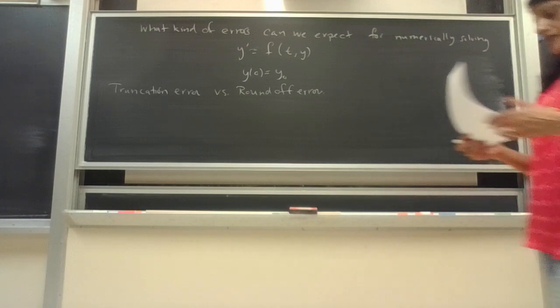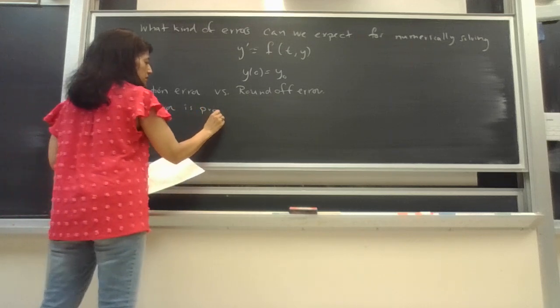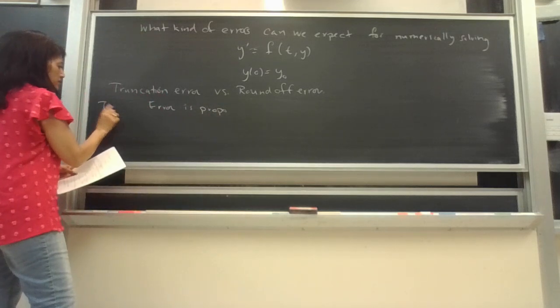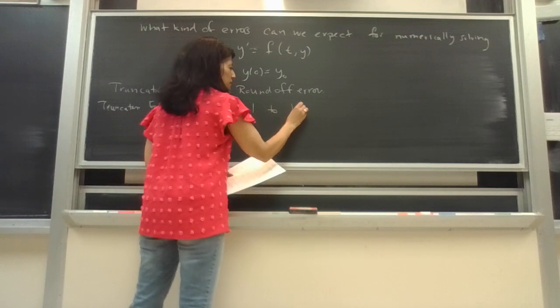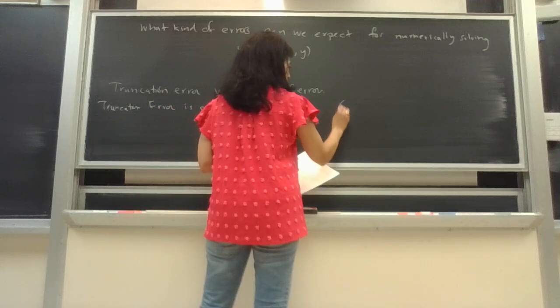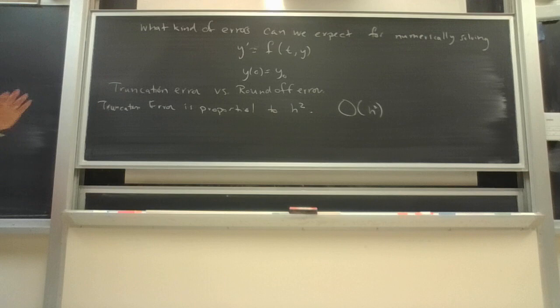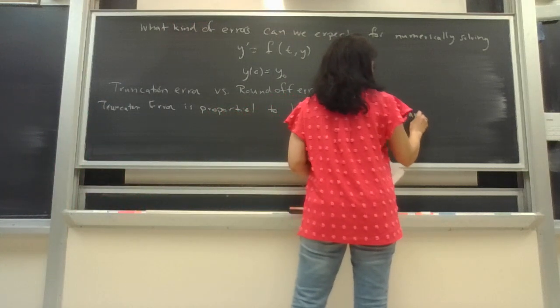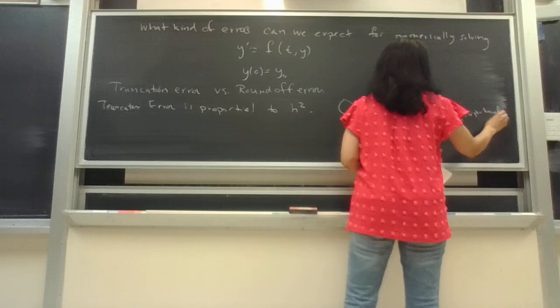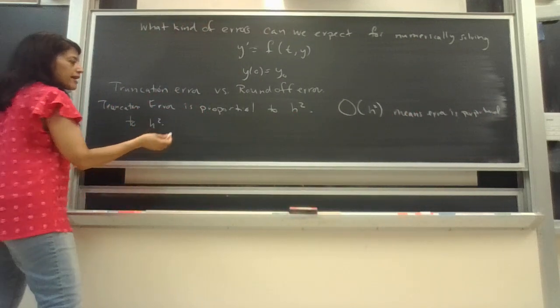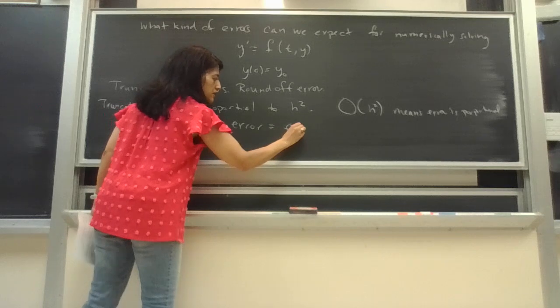But we know from Euler's method what we call truncation error, that the error is proportional. Truncation means just cut it off. I think it's big O that your error is proportional to. When you have big O of H squared, that means your error is proportional to H squared. Written out, it means that truncation error is equal to a constant times H squared.